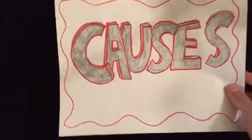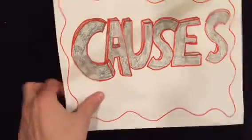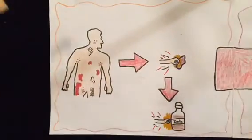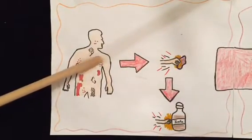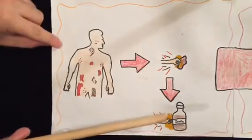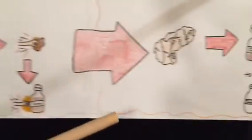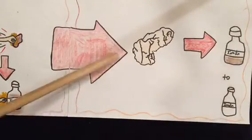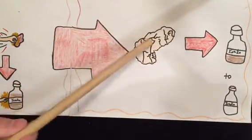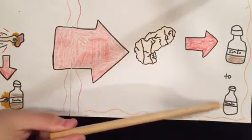Here are some of the causes for diabetes. Your immune system, which normally fights bacteria, starts to destroy insulin. That causes damage to the insulin-producing cells in the pancreas, which leaves you with little to no insulin.